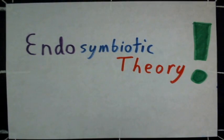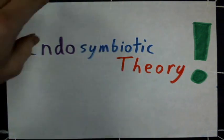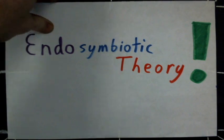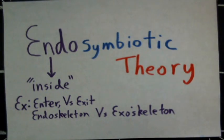Endosymbiotic Theory. The endosymbiotic theory is the most current theory on how modern cells have obtained mitochondria and chloroplasts. We can break down the word in order to better understand it. The first part of the word is endo. Endo refers to inside.